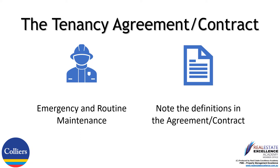The standard terms of the Tenancy Agreement Form 18A set out the legal definition of what is emergency maintenance and what is routine maintenance. Please note the definitions in the agreement. As stated, everything is legally required to be in writing under this tenancy contract. However, if you have an emergency repair situation as per the definition, please phone our agency and refer to the agreement for emergency after-hours contact details and procedures — we will confirm in writing at a later date.